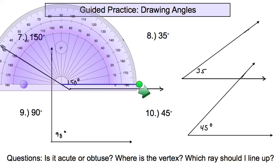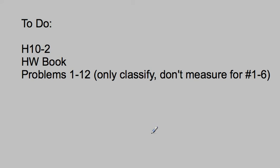Our homework today is H10-2, working out of the homework book, problems 1 through 10. On numbers 1 through 6 we're not going to measure — the lines are too short — so we're only going to classify them. Just take a look at them, use a corner of your paper, and name them obtuse, acute, or right angle. We'll get more practice measuring with a worksheet with bigger angles on it. Good luck.